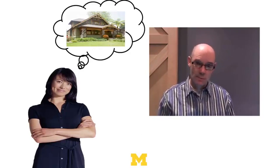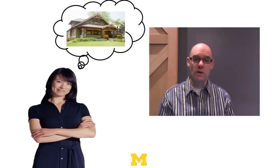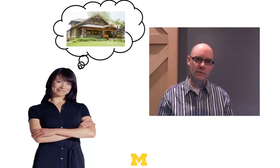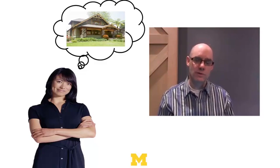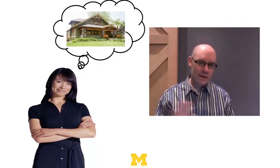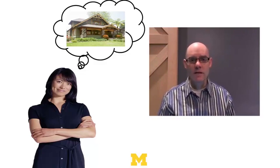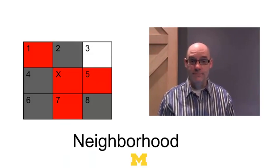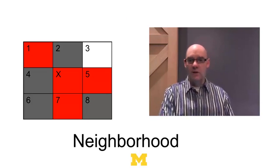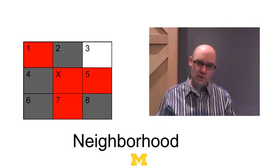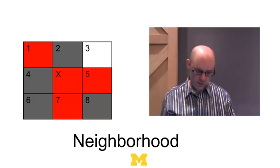Schelling's model is about people choosing where to live. He abstracted away from details like what kind of house to buy, and instead asked: should I stay here or should I move? He thought of each person as being located on a checkerboard — the whole city, whether New York, Detroit, or Houston — as a giant checkerboard, where each square can have a person or be blank.